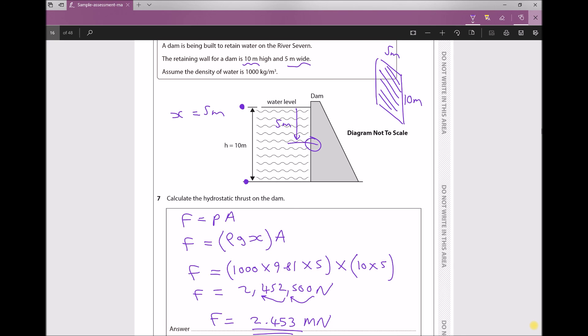The important thing to remember here is that we need to take the average pressure, which occurs at a depth of 5 meters, not at the full depth of 10 meters. Therefore, the height that we used was 5 meters.